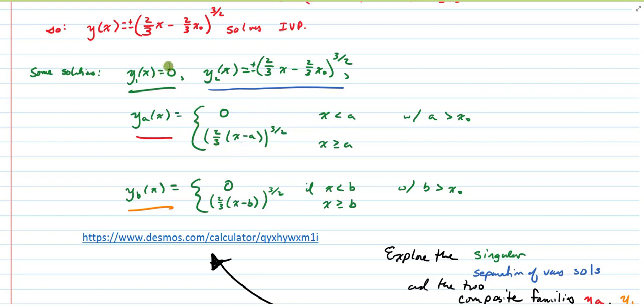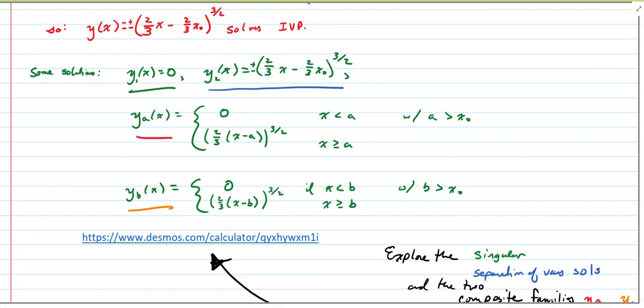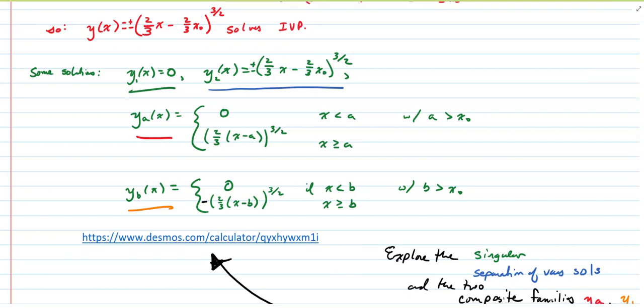And then we also have the solution where our function is zero up to a point, and then we have the negative solution here. Oops, and I've dropped the negative sign on that. I'll add that here. It should be in green. And there we have another family of solutions.